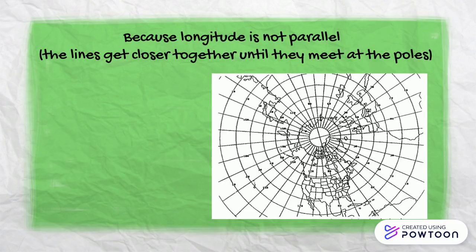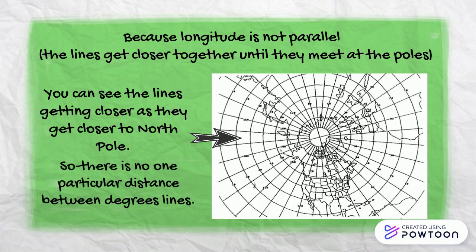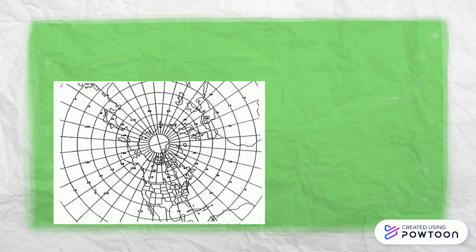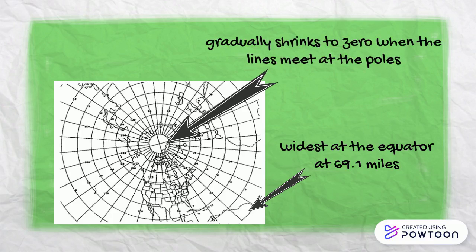Because longitude is not parallel, the lines get closer together until they meet at the poles, there is no one particular distance between degrees. A degree of longitude is widest at the equator at 69.1 miles and gradually shrinks to zero when the lines meet at the poles.